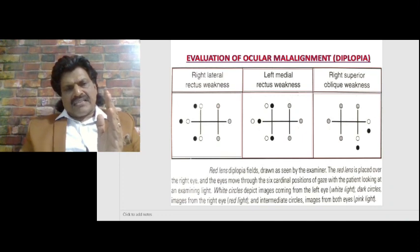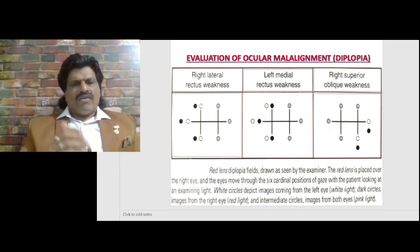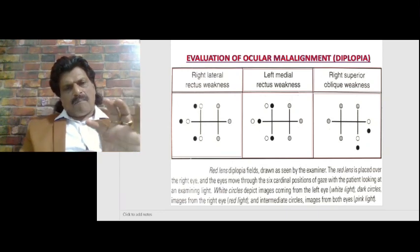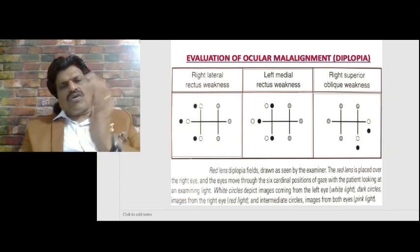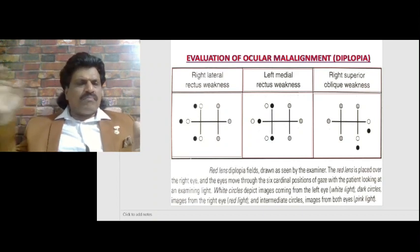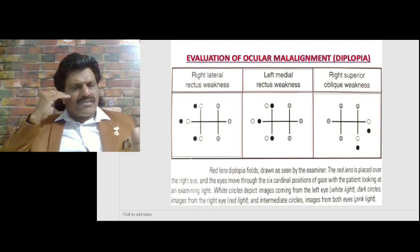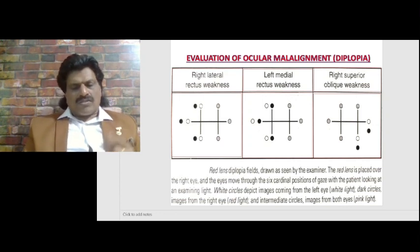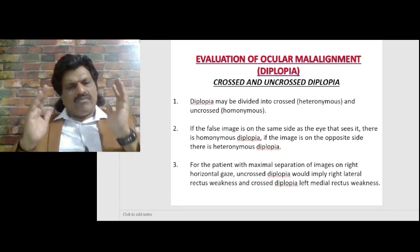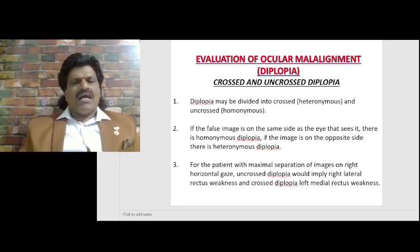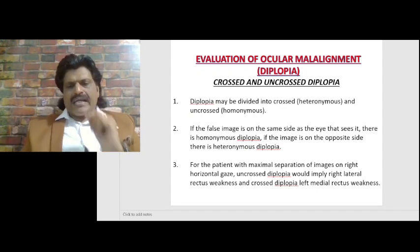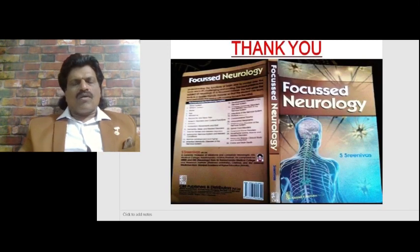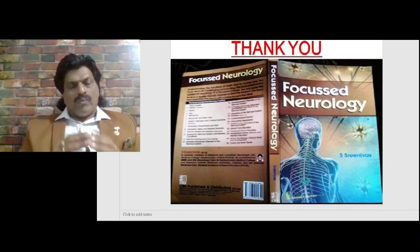Looking at the diagrams: for right lateral rectus involvement, the image is uncrossed — on the same side as the right lateral rectus. For left medial rectus weakness, the plain circles go beyond the darkened circles, representing crossed diplopia. So uncrossed diplopia means the false image is on the same side as the weakened eye, while crossed diplopia means the false image is on the opposite side of the weakened eye.